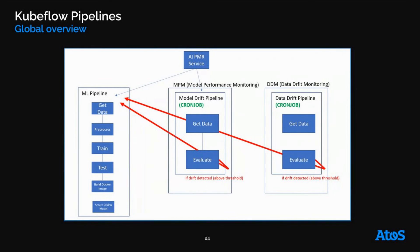Here's a global overview of the three workflows we have set up on Kubeflow: the main ML pipeline that trains an AI model, and two others that monitor data and the model. In case of a drift, the model is retrained either to account for a new data distribution or because the model performance is fading.